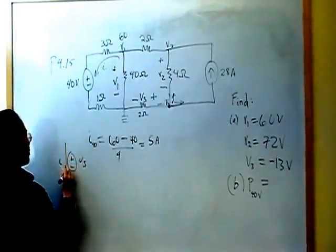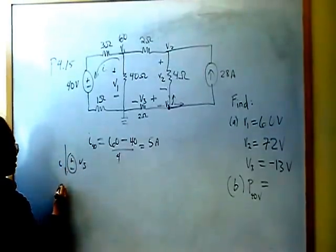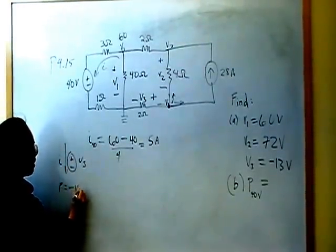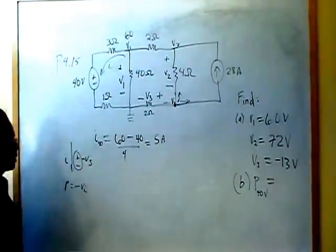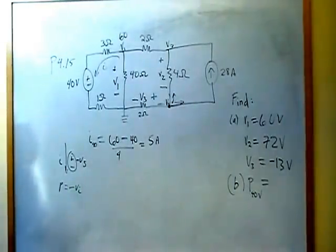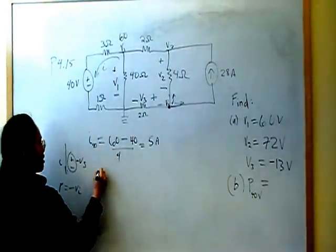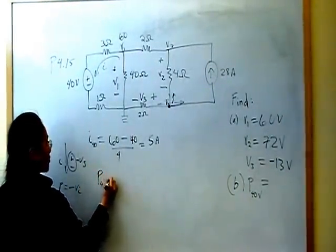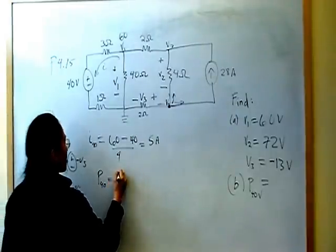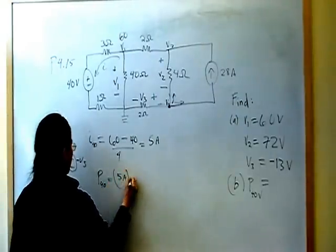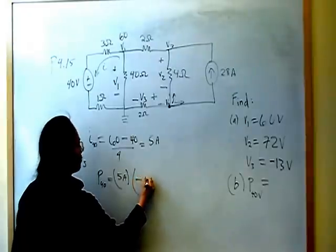So 5 amps is going through there. But remember the passive sign convention. Positive current, and you have some voltage source. When positive current goes in this direction, then P is equal to negative VI, which means the source is negative.